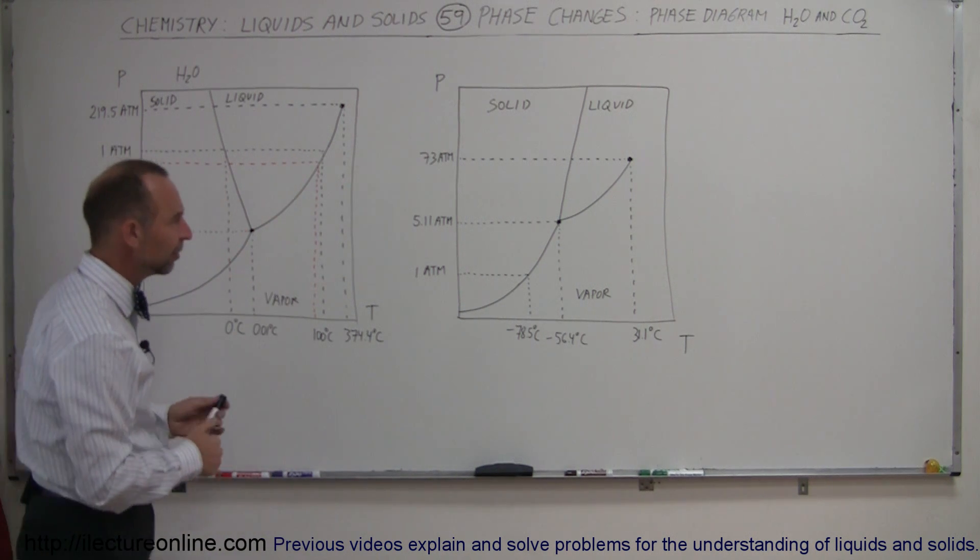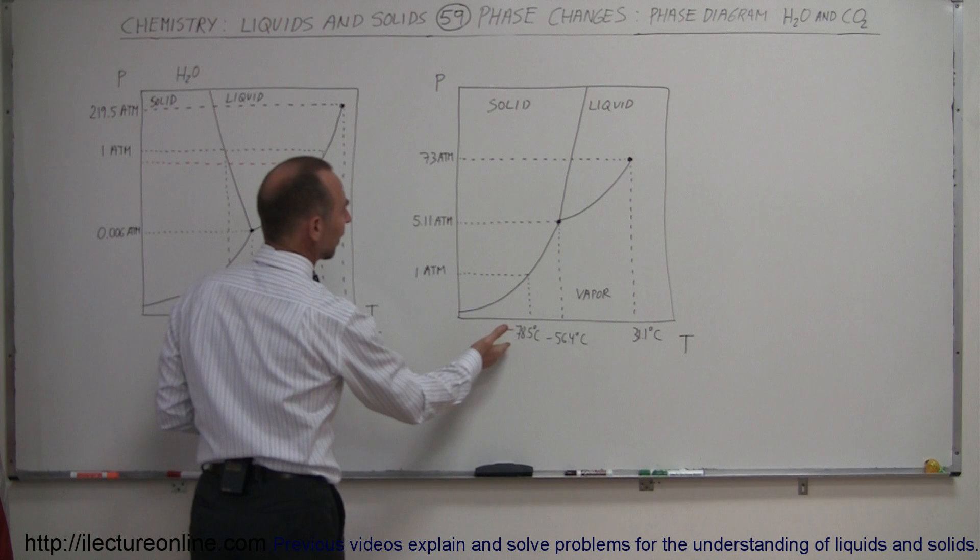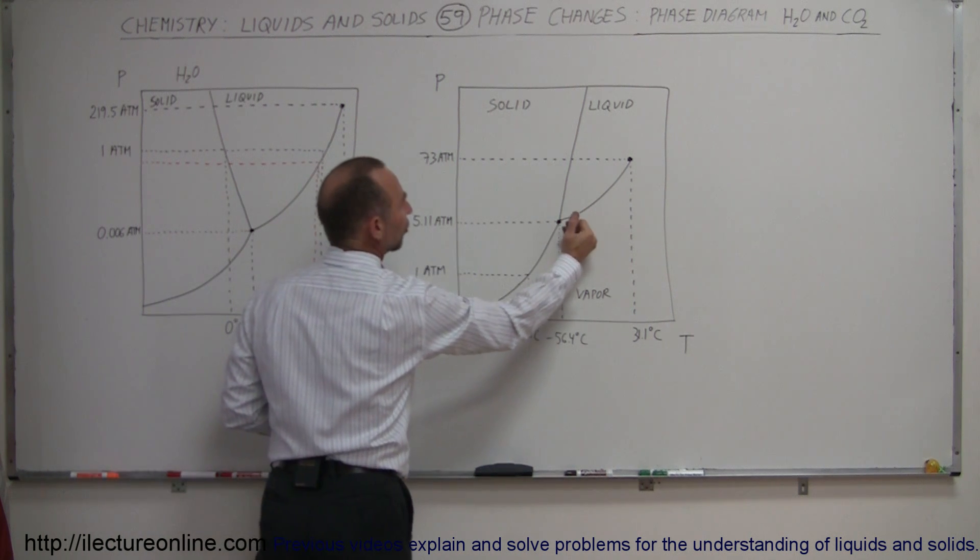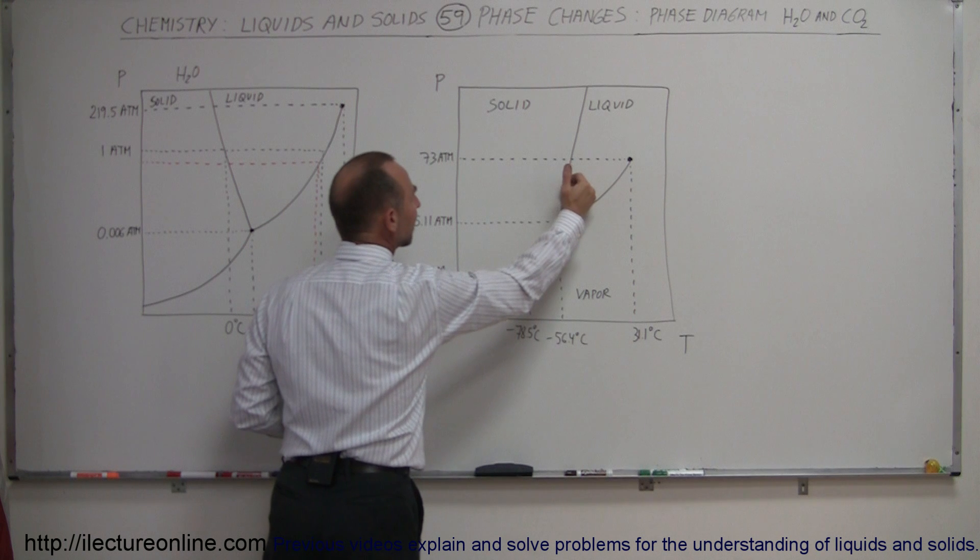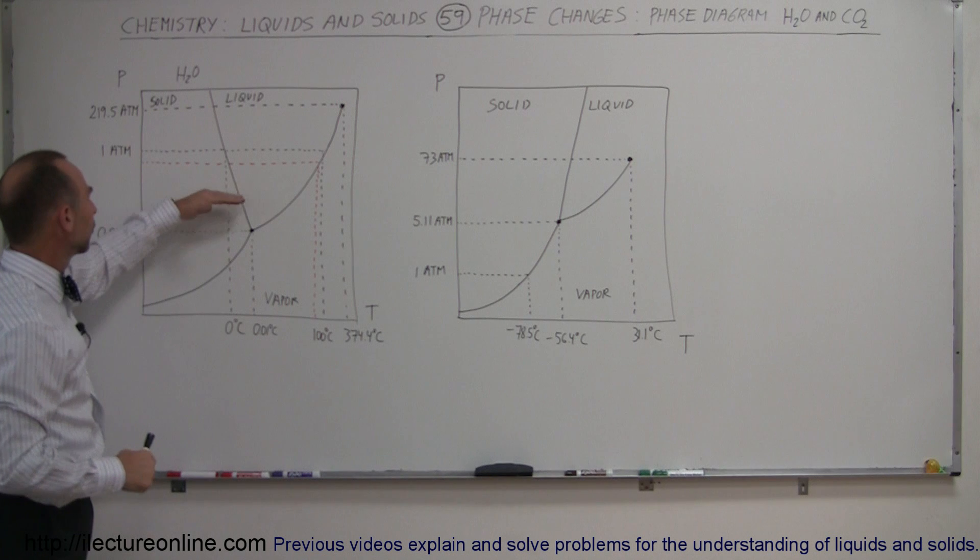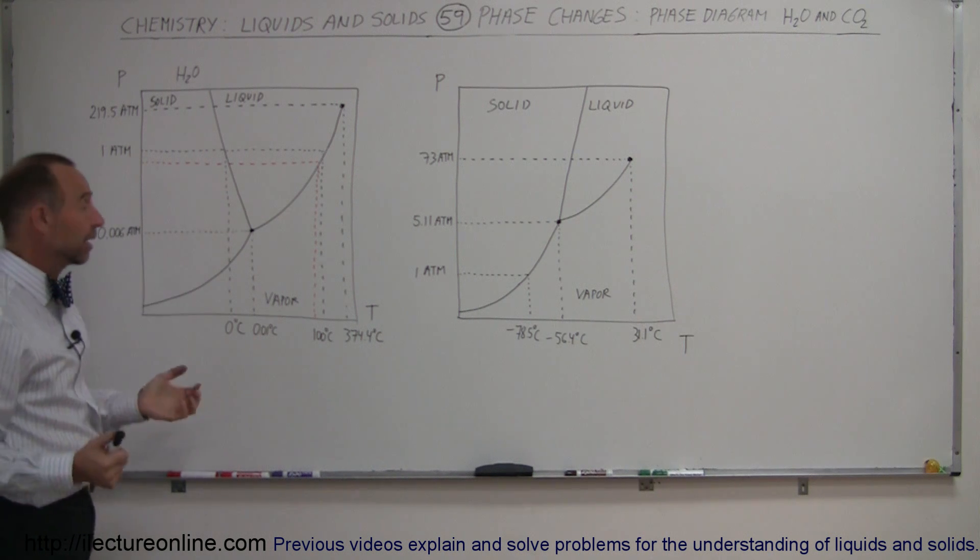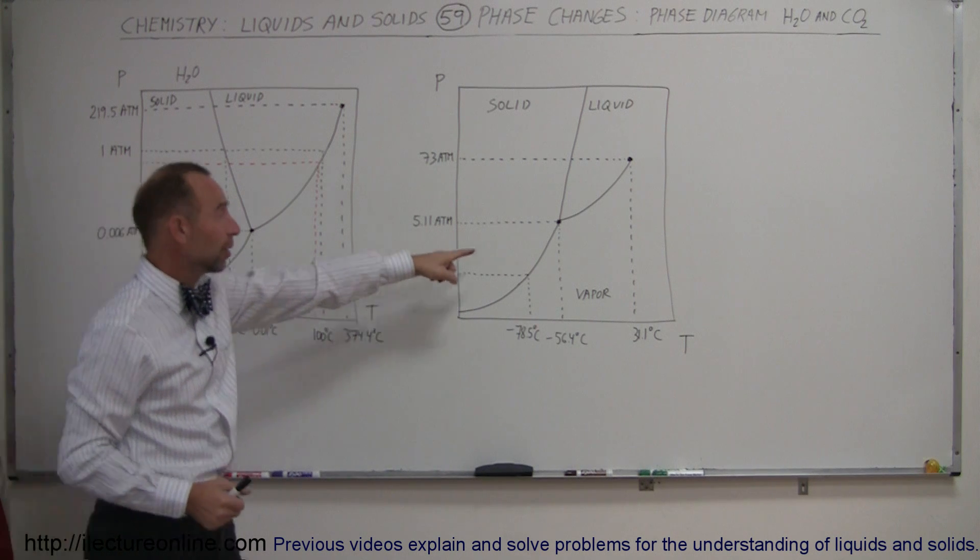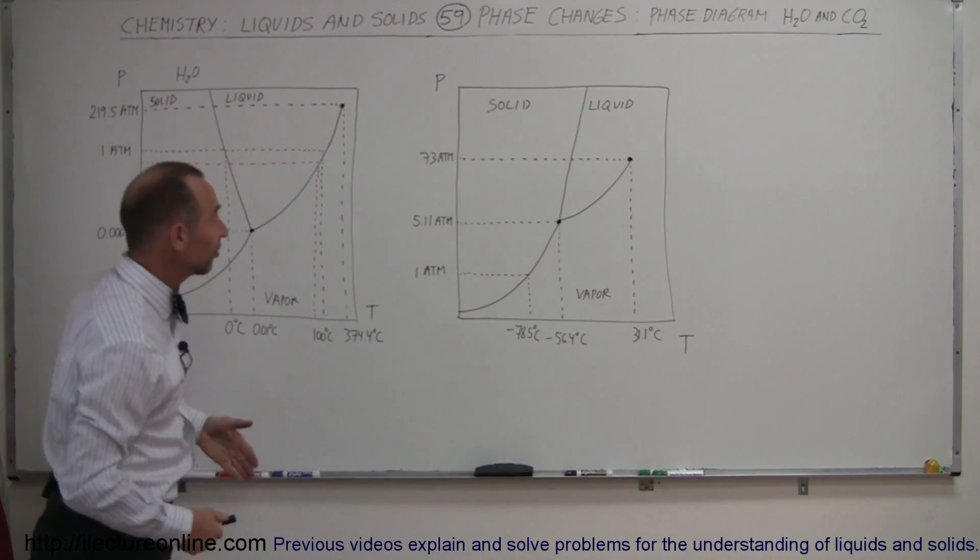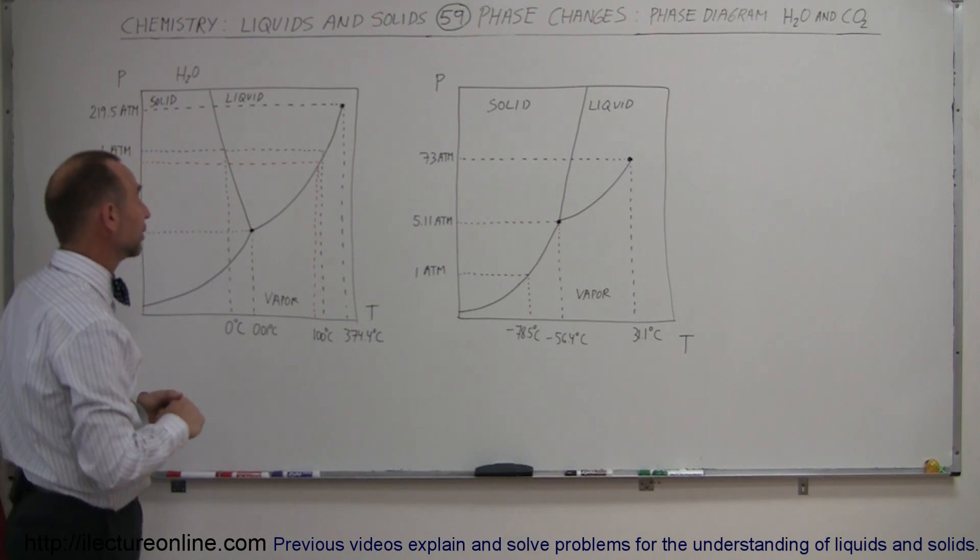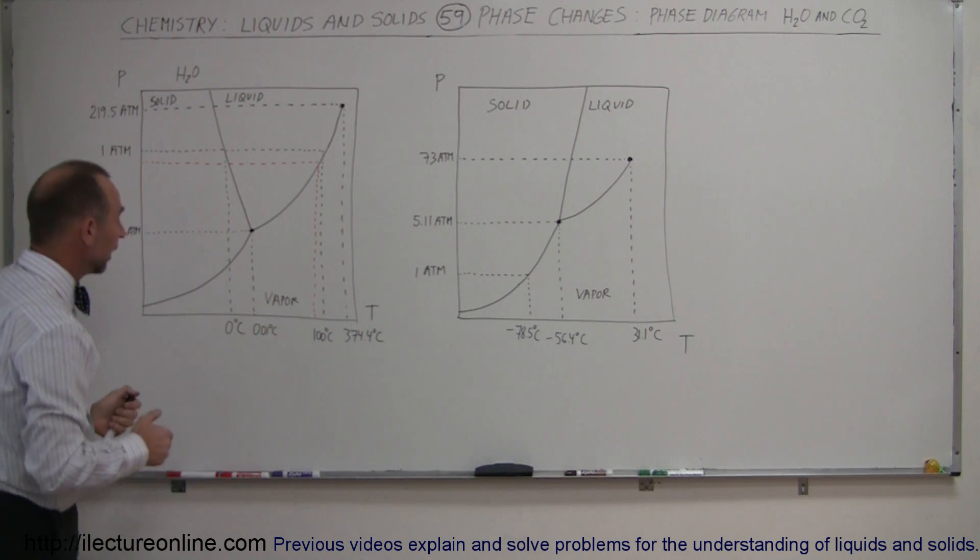So what that means is notice that until you get up to the triple point, liquid cannot exist. You have to have a pressure that is greater than that for liquid to exist. And here on the Earth, you have to have a pressure greater than that for liquid water to exist, which is a good thing. Because if you needed something at very high pressure, then if liquid water looked like this, it couldn't exist at pressures below 5 atmospheres, so you wouldn't have any liquid water on the Earth.